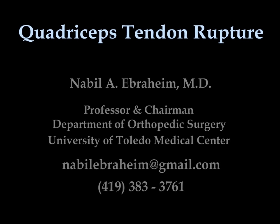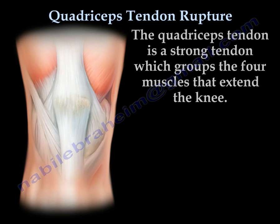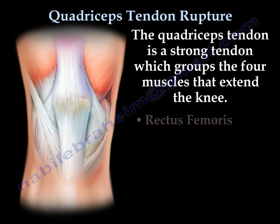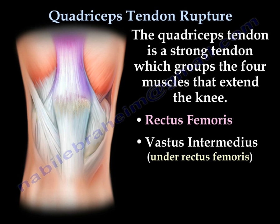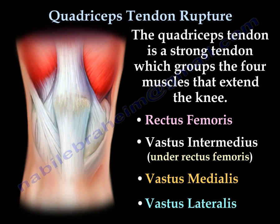Quadriceps tendon rupture. The quadriceps tendon is a strong tendon which groups the four muscles that extend the knee: rectus femoris, vastus intermedius (which is under the rectus femoris), vastus medialis, and vastus lateralis.